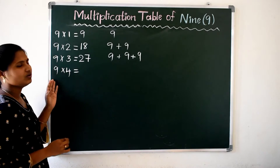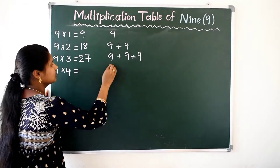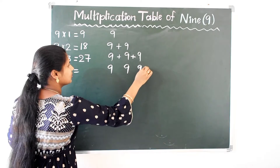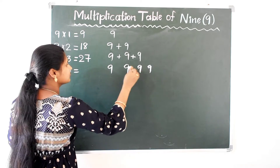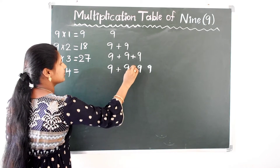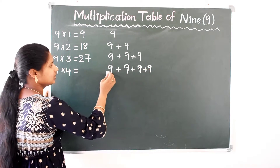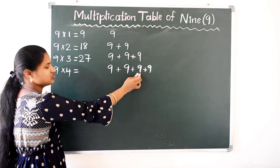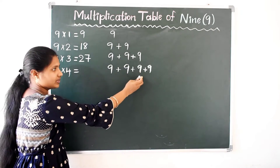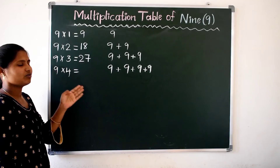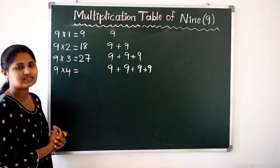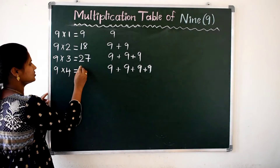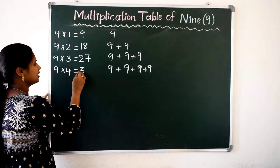Next, 9 4's are — 9 4 times. I am writing here 9 4 times. So 9 plus 9 is 18, 18 plus 9 is 27, 27 plus 9 is 36. Ok, 9 4's are 36.